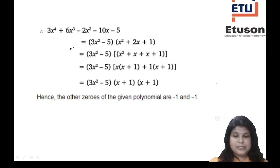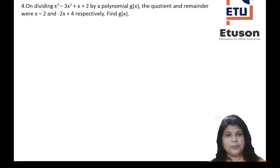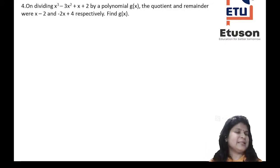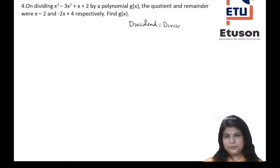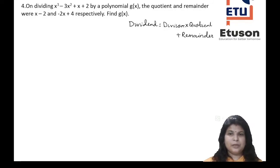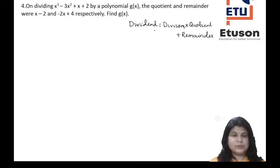Question 4: On dividing x³ - 3x² + x + 2 by polynomial g(x), the quotient and remainder were x - 2 and -2x + 4 respectively. Find g(x). Here the quotient and remainder are given but the divisor is not. Using the formula: dividend = divisor × quotient + remainder, we get: divisor = (dividend - remainder) ÷ quotient.